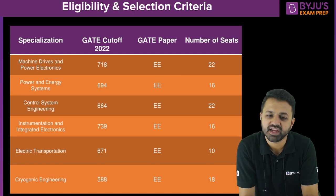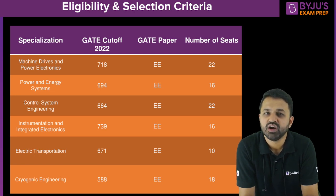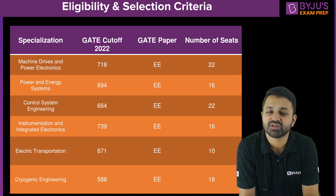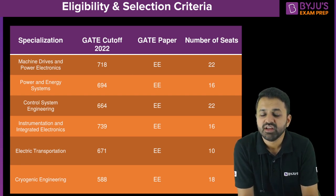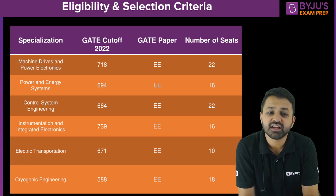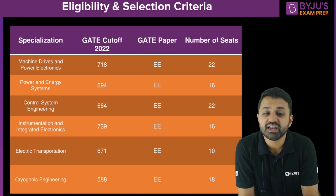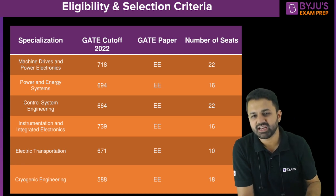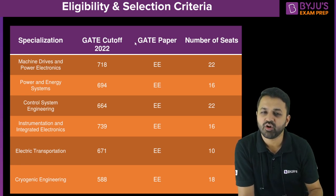Electric Transportation has a cutoff of 588, so even with a lower GATE score you can apply for IIT KGP through this specialization. Since the EE paper was tough this year, the required GATE score will likely be less than previous year figures, so you can plan accordingly and apply before the deadlines.